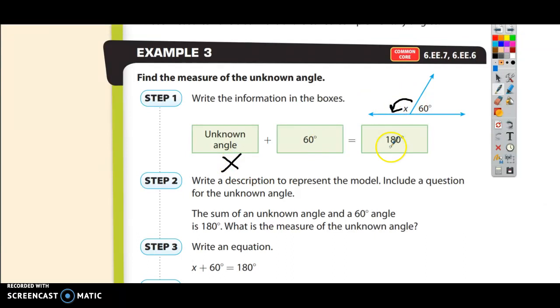It says plus 60 has to be 180 because we just talked about how a straight line, if I do the whole thing, it's a measure of 180 degrees. Well, this part of it is 60 and this part of it is unknown. So we do the unknown plus 60 equals 180.